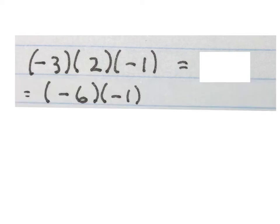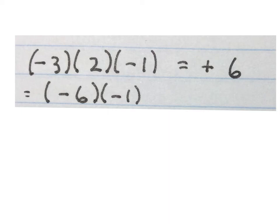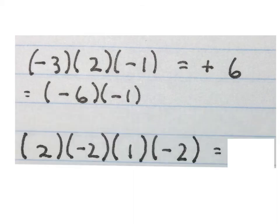One way of doing it is to multiply the minus 3 with a 2, which gives me a minus 6. Keep the minus 1 and now we multiply these two. Final answer: positive 6. You might have done it in a different way — as long as you get the same answer.